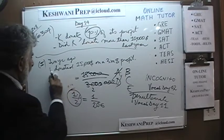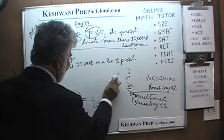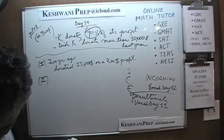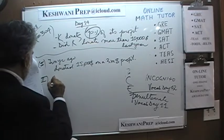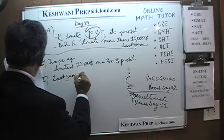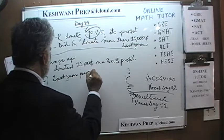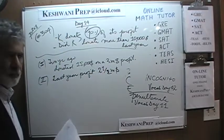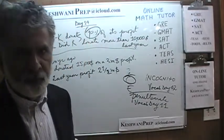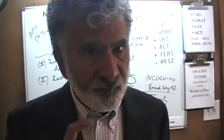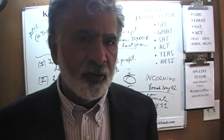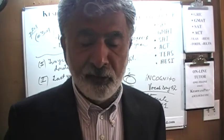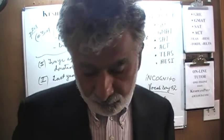We do have sufficient data from statement 1. The second statement tells us that last year the profit was 2 and a half million dollars. So the answer is C — putting the two statements together, we can easily figure out how much they donated last year. The first statement gives us the percentage; the second gives us last year's profit.